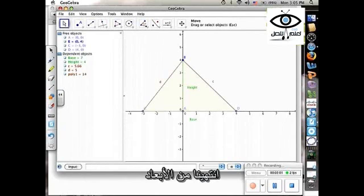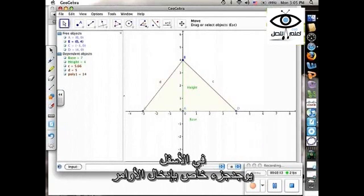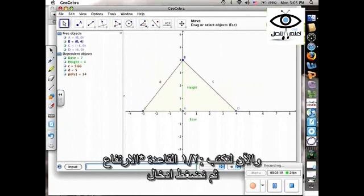So now I have my two measurements and I have what the computer is telling me that the area is. So let's check to see if the formula, one-half base times height, is correct for this. So down at the bottom here is an input bar where we can input functions. So let's type in one-half times the base, which is the name of that segment. Times the height. And then just hit return.